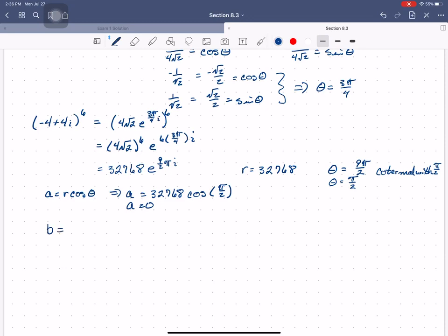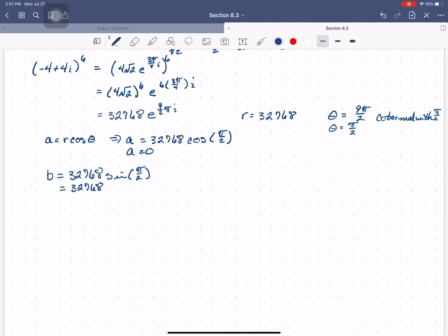So b equals r times the sine of pi over 2. What's the sine of pi over 2? One. So b equals 32,768, which means that negative 4 plus 4i raised to the sixth power is 32,768i.